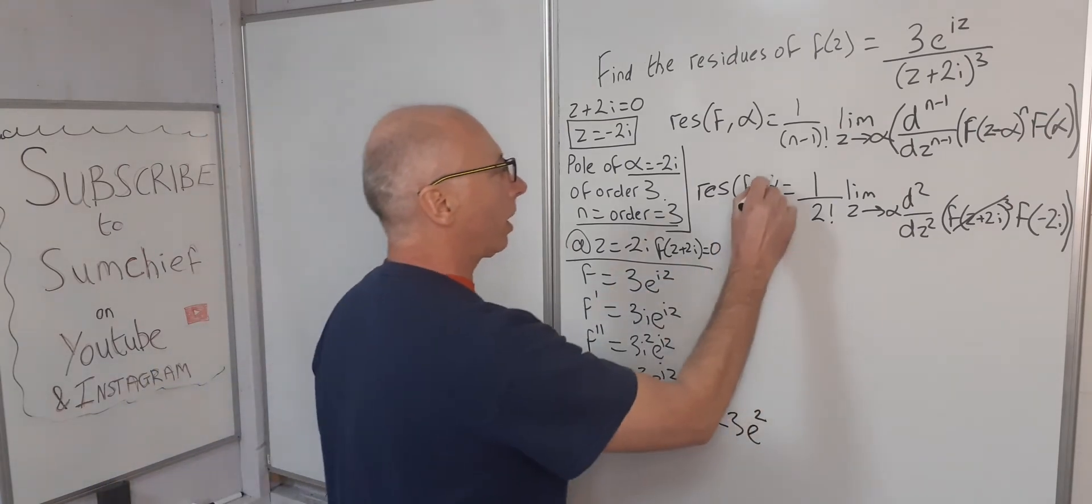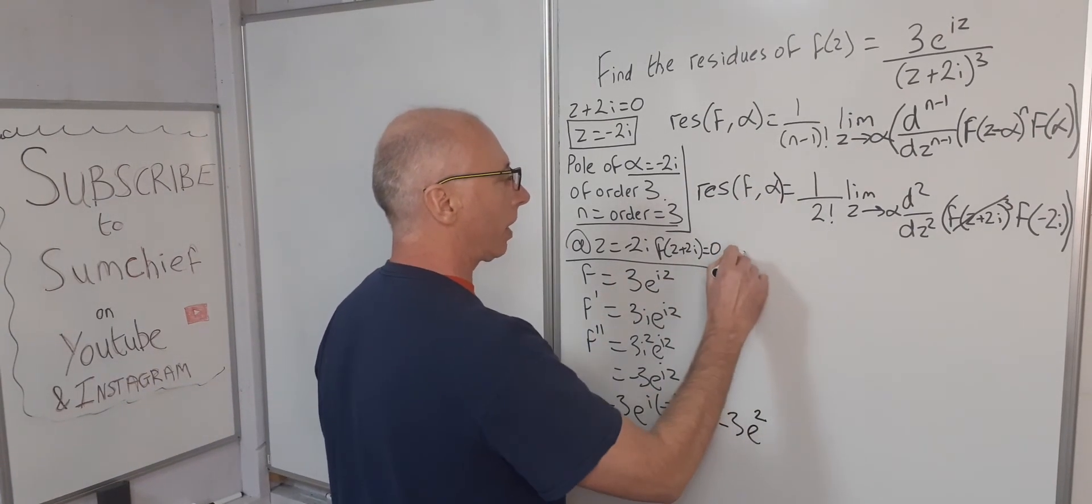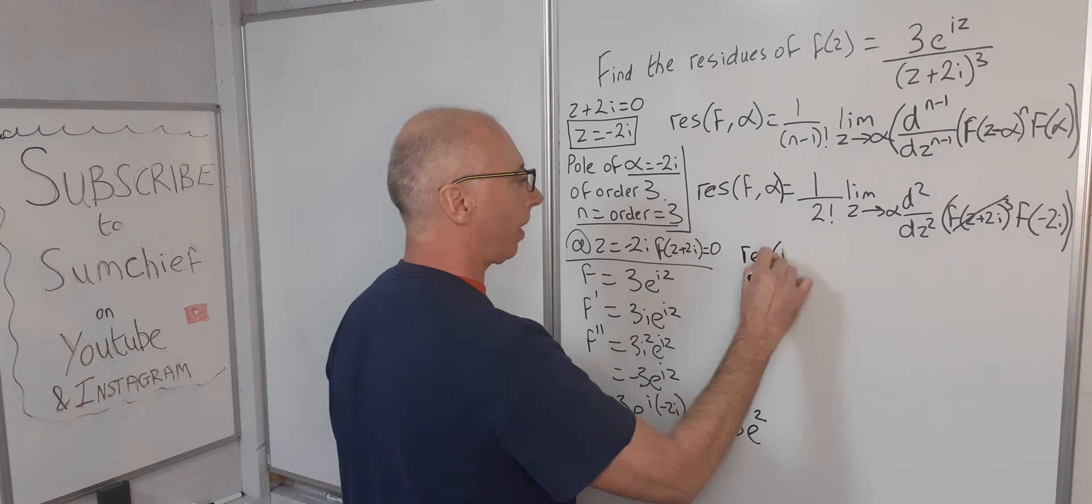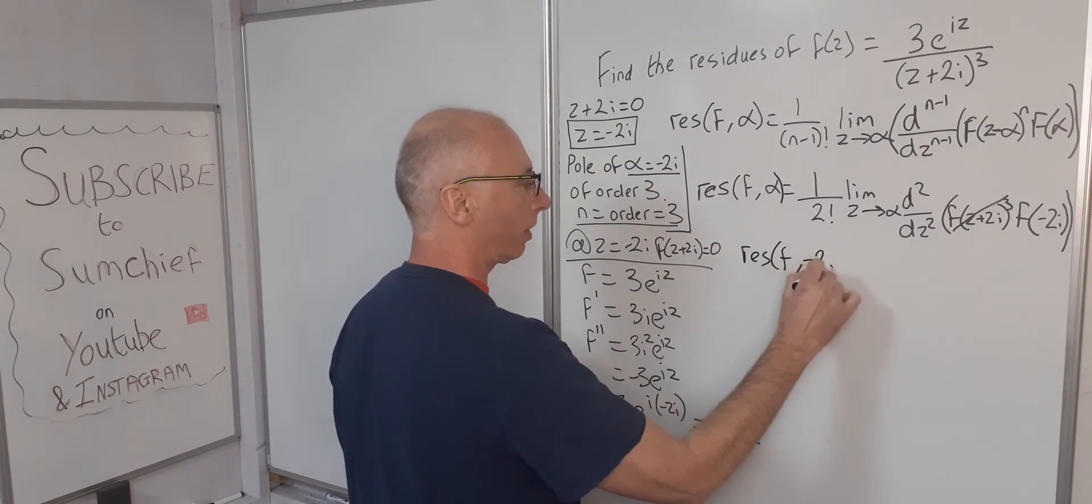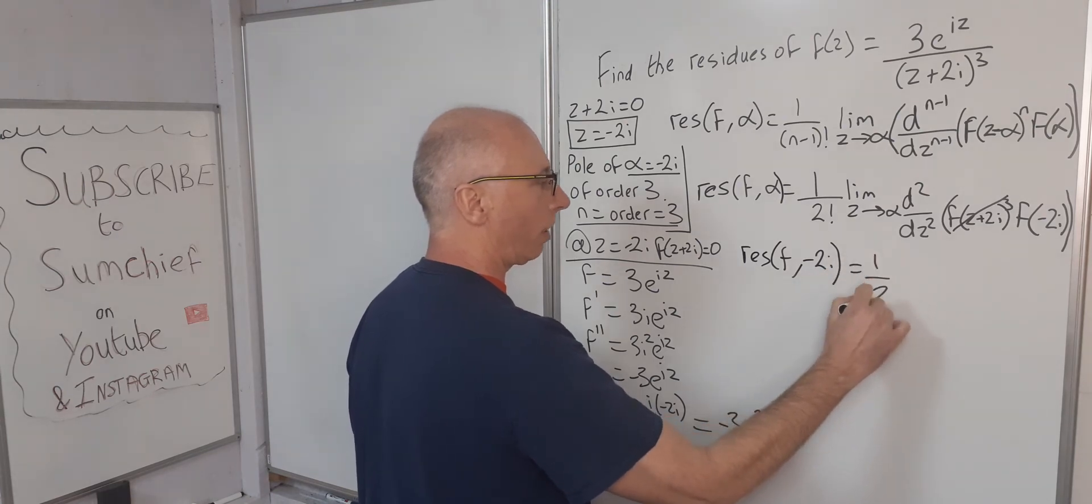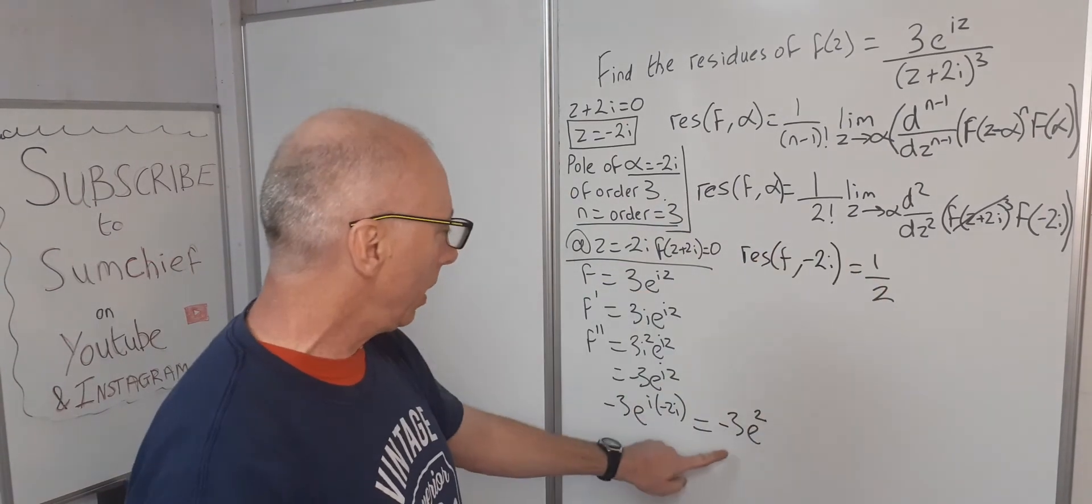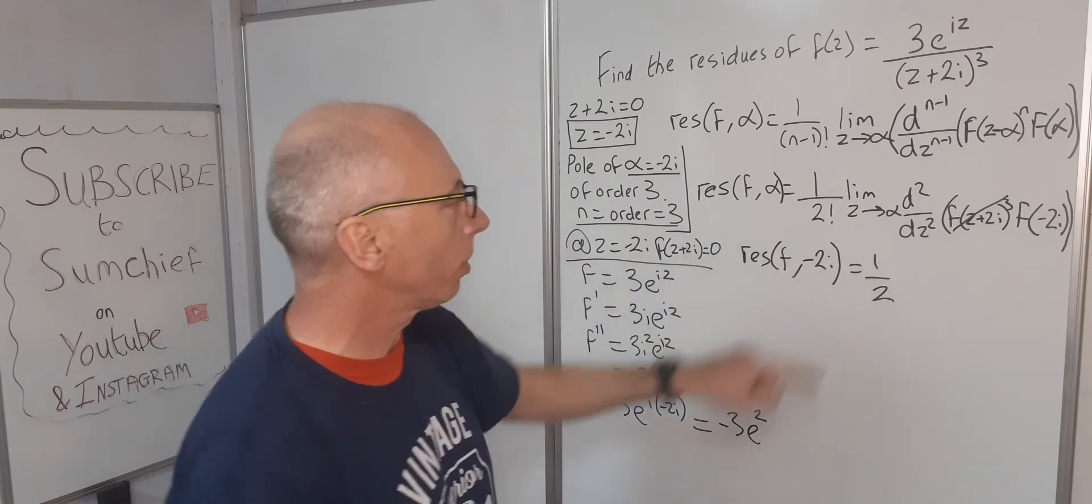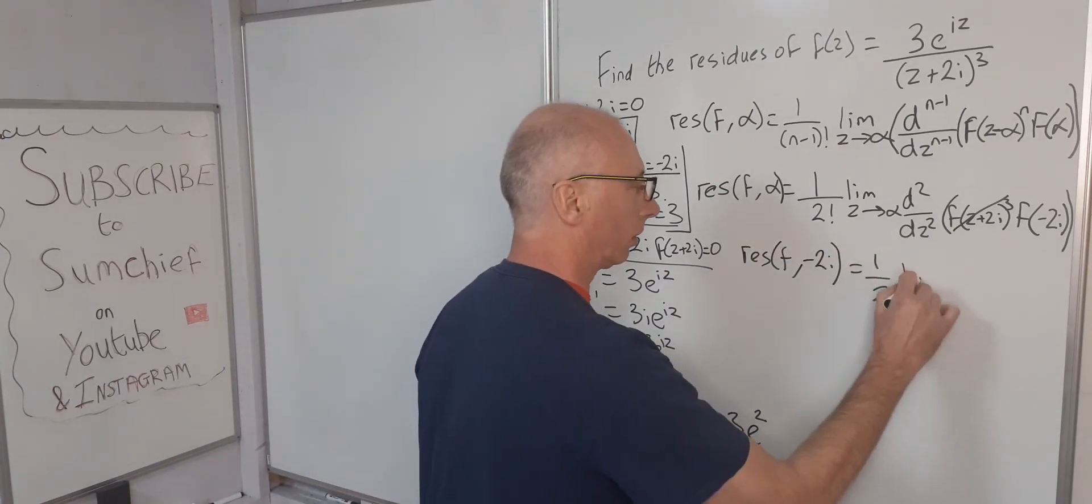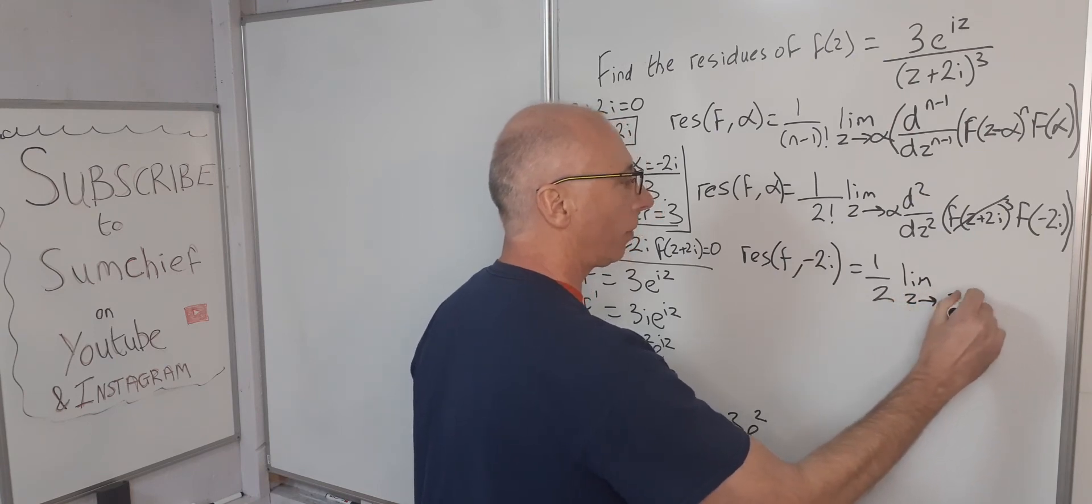So let's go through this function here. Let's put a nice bracket there. So now we can say the residue of f at -2i, put our value in for the alpha, equals one half. Now the limit as z approaches alpha, i.e. z approaches -2i.